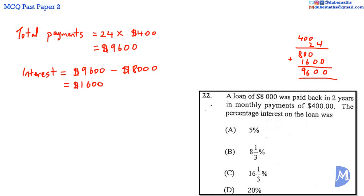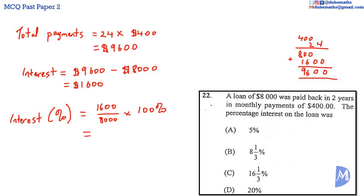This interest as a percentage on the loan is equal to $1,600 divided by the initial loan $8,000, multiplied by 100%, which equals 20%. The answer is D.